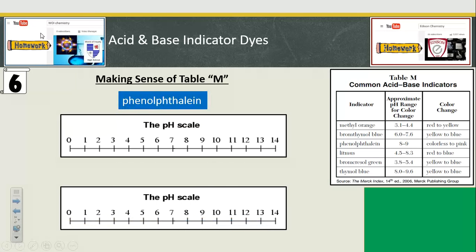More indicators. Phenolphthalein. This one's cool because it's colorless below pH 8. It looks like you can't see it's there. But at pH 9, it turns pink, bright pink. Really neat. We're going to use that in our acid-base titration lab.